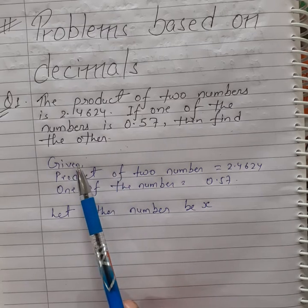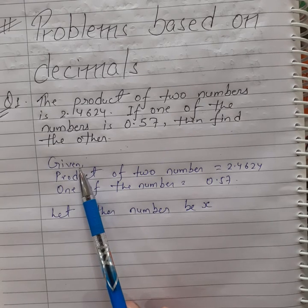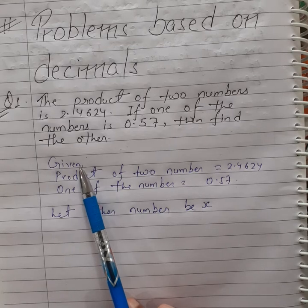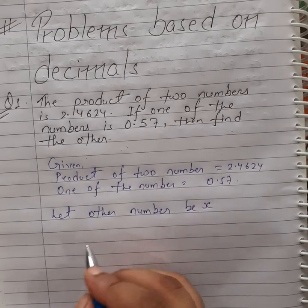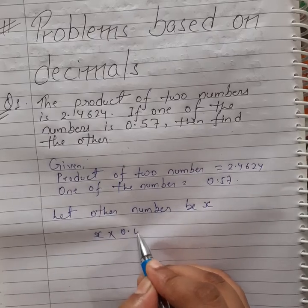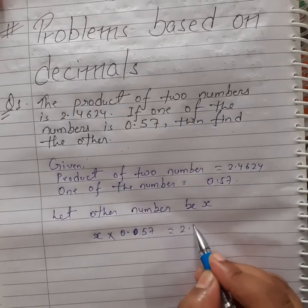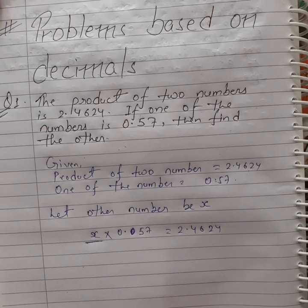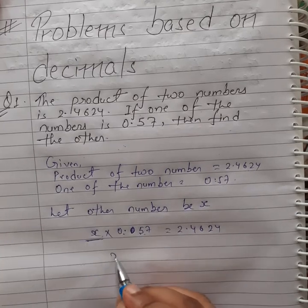If the product of two numbers is 20 and one of the numbers is 4, then how do we find the other number? Yes, by dividing the product by one of the numbers — that is 20 divided by 4, we get 5. Similarly, let the other number be x. So x multiplied by 0.57 equals 2.4624. We have to find the value of x. Since 0.57 is on the multiplication side, when we change the side it goes into division.